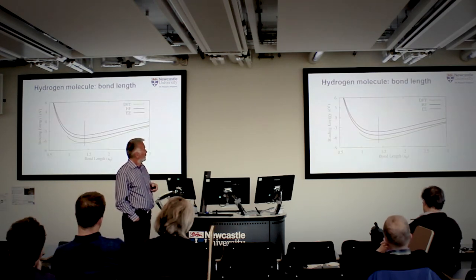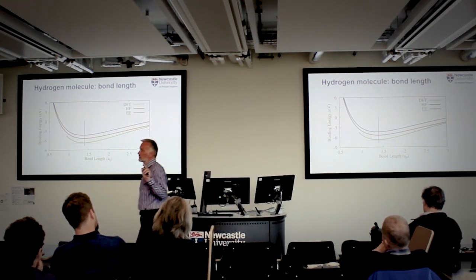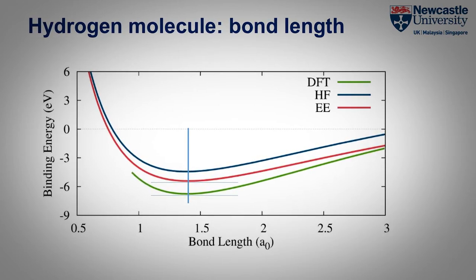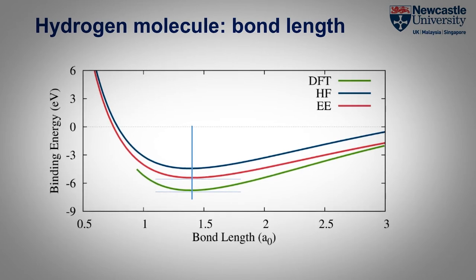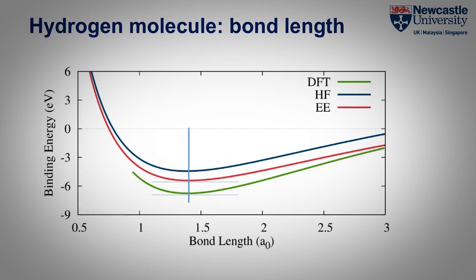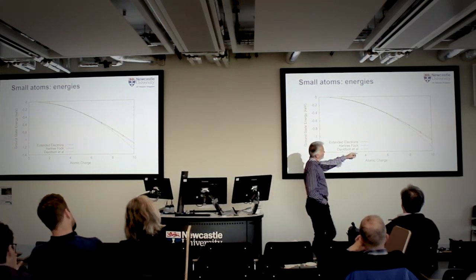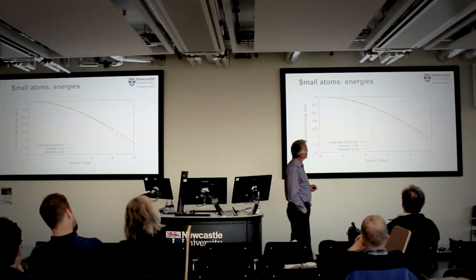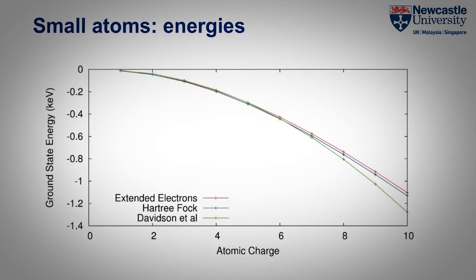Here I show what we get with it. We calculated the hydrogen molecule — with no fitting parameters, everything coming from first principles. I have three results: the Hartree-Fock result, the standard DFT result, and ours. For the bond length between the two hydrogens, we are in the same ballpark as both. We also used the code to calculate up to 10 electrons — up to neon. You can see results are very close to the Hartree-Fock standard, and slightly higher than DFT because we haven't yet included one part of the electron-electron interaction.